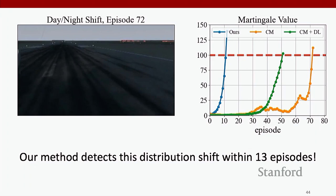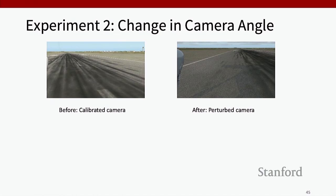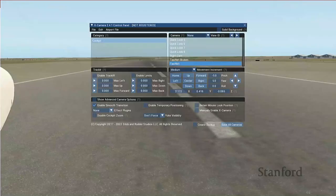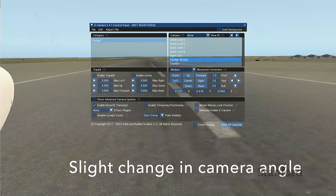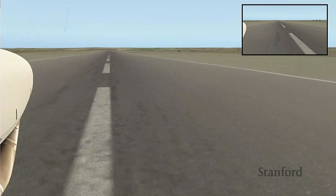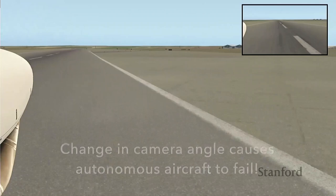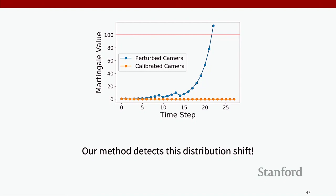We also looked at distribution shift caused by a small change in camera angle, which could happen if a camera is knocked slightly askew. On the left is the calibrated camera, on the right the perturbed camera — only perturbed very slightly. This small change causes the plane to go off the runway. Our method also detects this distribution shift: when there is a distribution shift the martingale grows very rapidly, and when there is no distribution shift the martingale does not grow. We empirically find a very low false negative rate — in our experiments, each time there was a distribution shift, our method caught it.